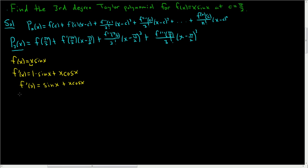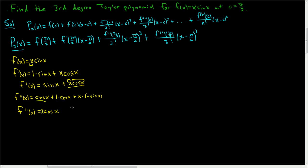Now we find the second derivative. The derivative of sine x is cosine x. Then for x cosine x we use the product rule again: derivative of x is 1 times cosine x, plus x times the derivative of cosine x, which is negative sine x. Combining: cosine x plus cosine x gives 2 cosine x, and then minus x sine x. So f double prime of x equals 2 cosine x minus x sine x.